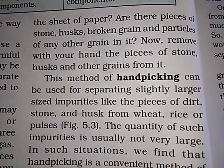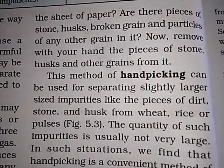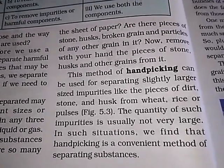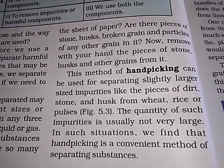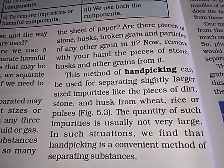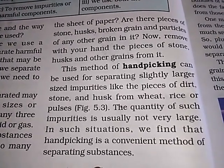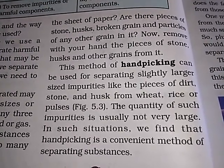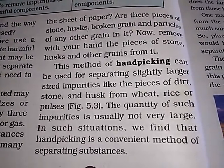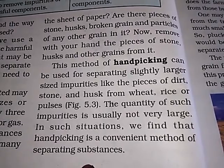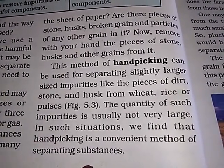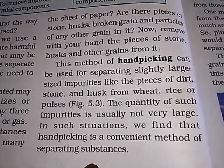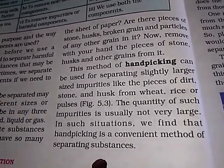Remove with your hand the pieces of stone, husk, and other grains from it. This method of hand picking can be used for separating slightly larger size impurities like pieces of dirt, stone, and husk from wheat, rice, or pulses. The quantity of such impurities is usually not large, and in such situations hand picking is a convenient method of separating substances.